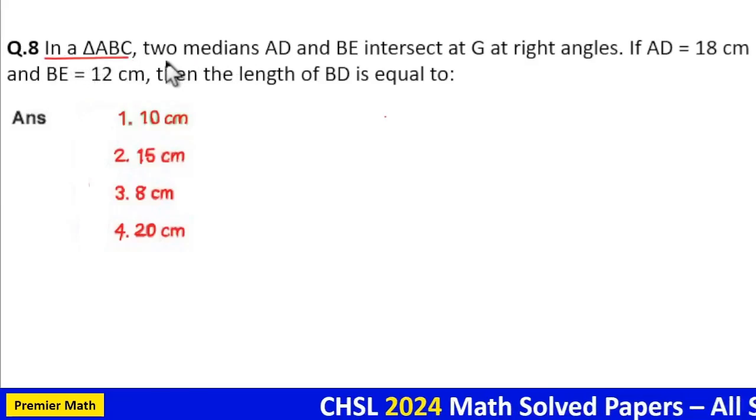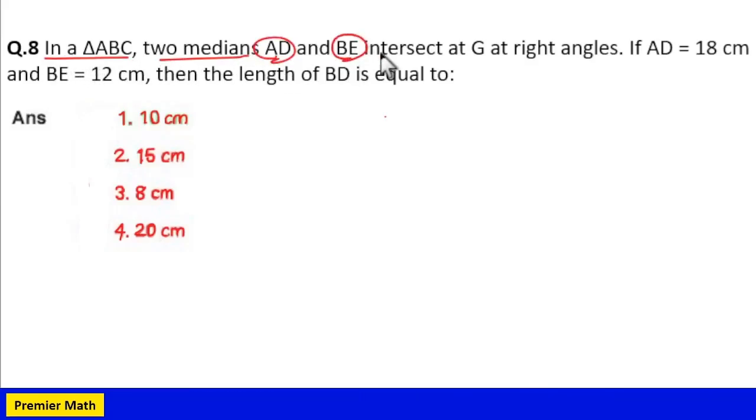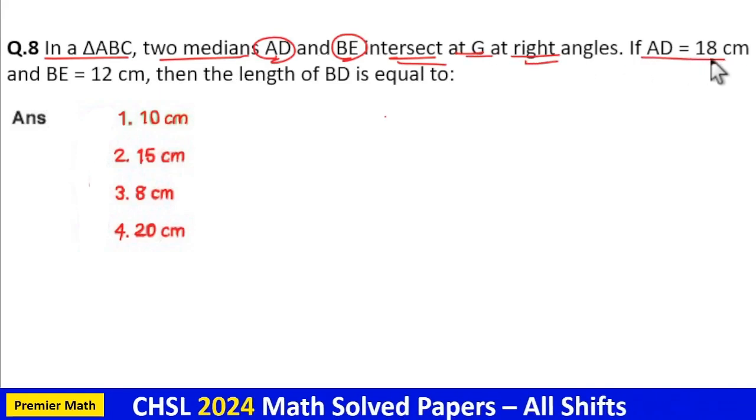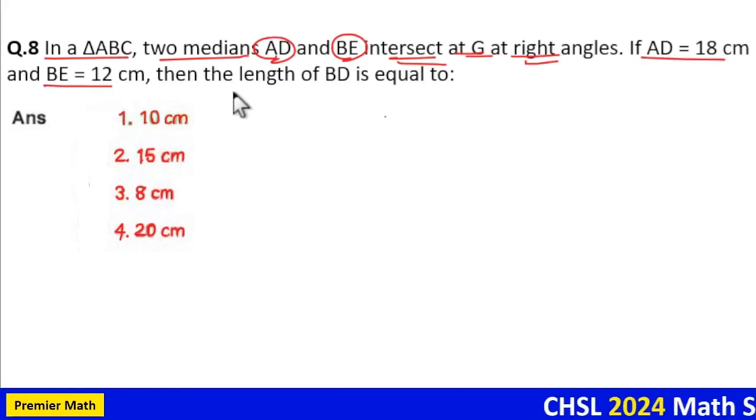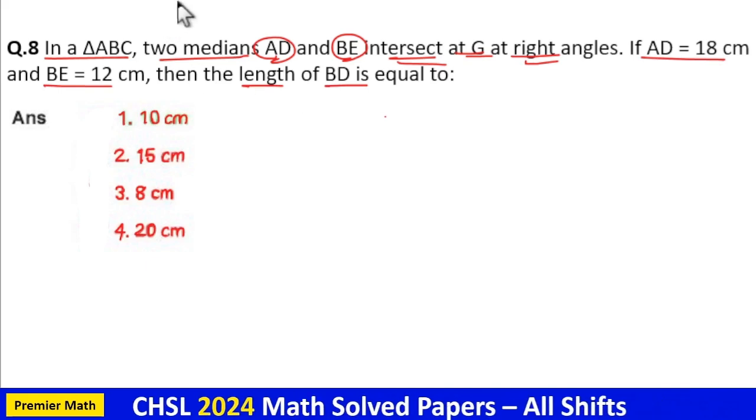In a triangle ABC, two medians AD and BE intersect at G at right angles. If AD is 18 cm and BE is 12 cm, then the length of BD is equal to...